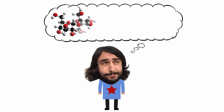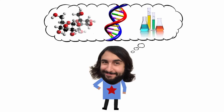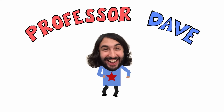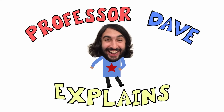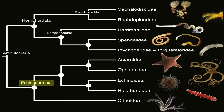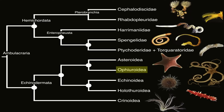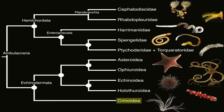Professor Dave Explains. As we discussed previously, the five extant echinoderm classes are Crinoidea, Asteroidea, Ophiuroidea, Echinoidea, and Holothuroidea. In the previous tutorial we covered the crinoids.